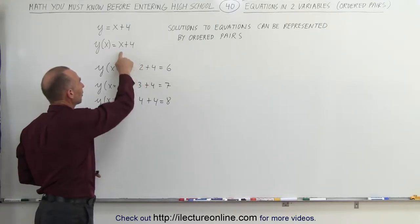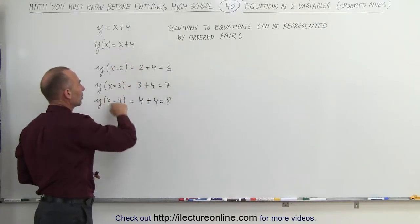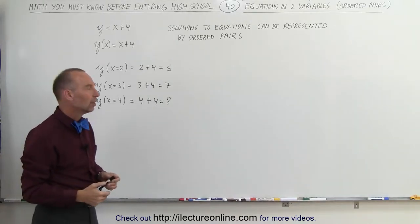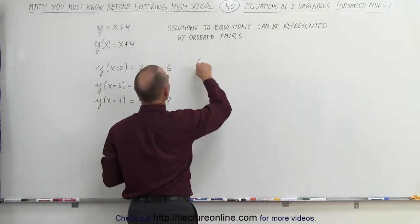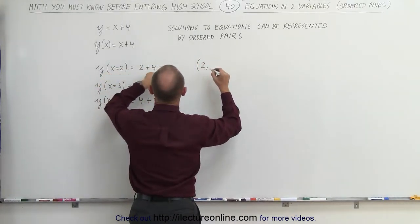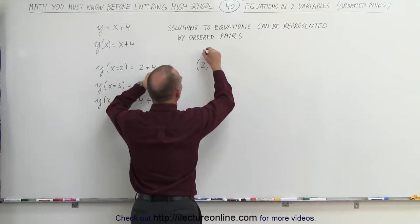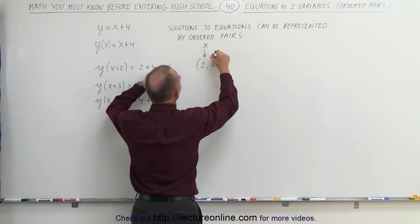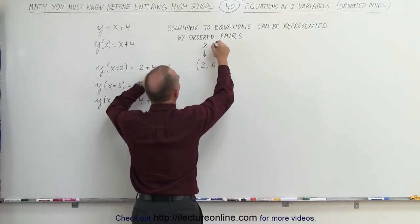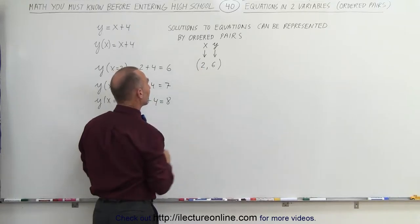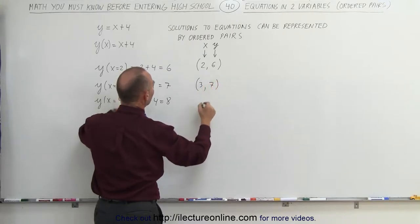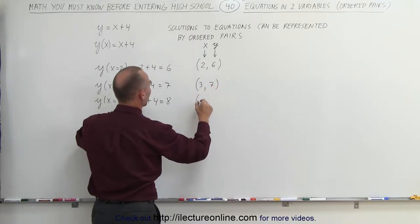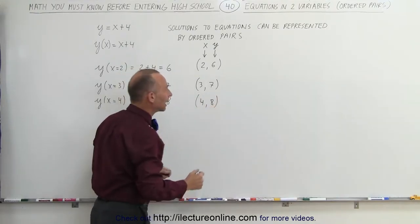Instead of x we write 2, instead of x we write 3, instead of x we write 4 — and that's how we evaluate it. So we can represent those solutions by an ordered pair as follows: we write the number for x, which is 2, and then the number for y, which is 6. The first number represents the value for x, and the second number represents the corresponding value for y, because this value depends upon what we gave to x. Here we can have an ordered pair where x is 3 and y is 7, and here where x equals 4 and y equals 8, and so forth.